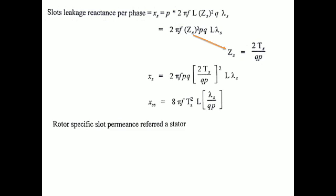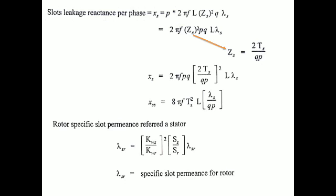This is the final expression for the stator. For the rotor part, referred to the stator, the rotor permeance is denoted with a dash. Lambda_sr' (specific slot permeance of the rotor referred to stator) is: (Kws / Kwr)² × (Ss / Sr) × λsr, where Kws and Kwr are window space factors for stator and rotor respectively, Ss and Sr are the stator and rotor slot numbers, and λsr is the specific slot permeance of the rotor.